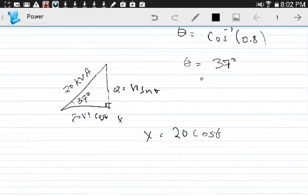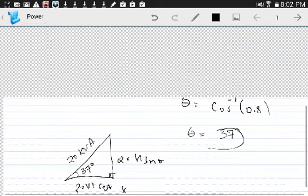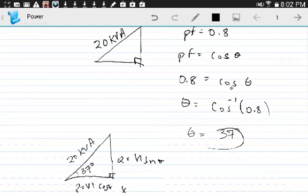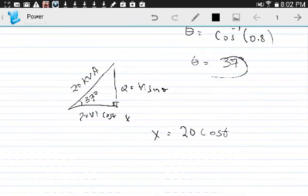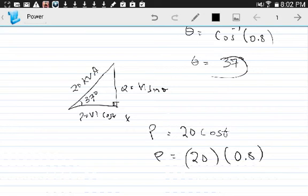But we really didn't need to solve for the angle because cosine of the angle equals 0.8. So to get the power, that would be 20 times 0.8, and the power would be 16. This is kVA, so that would be 16 kilowatts.